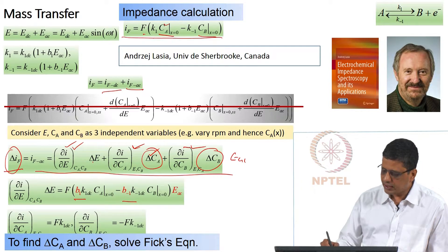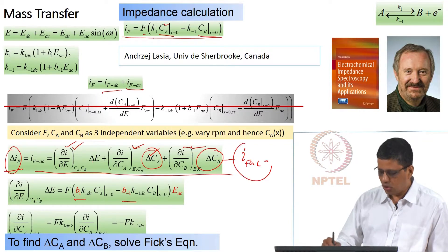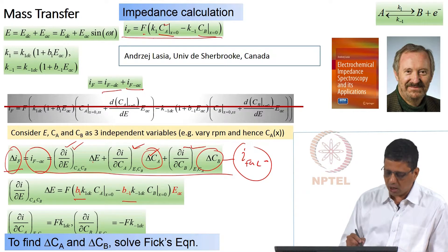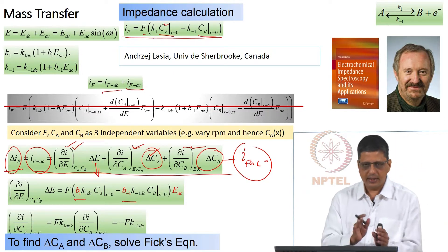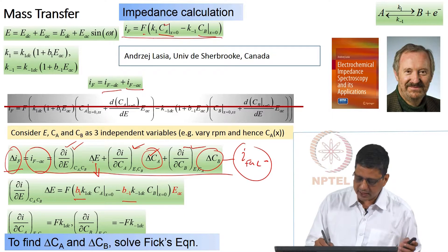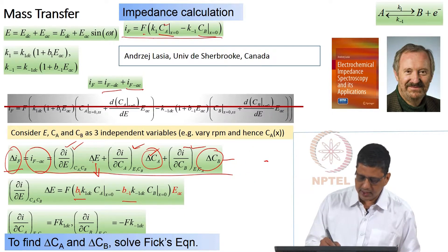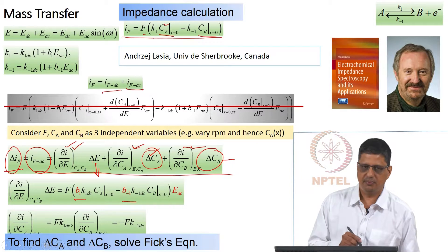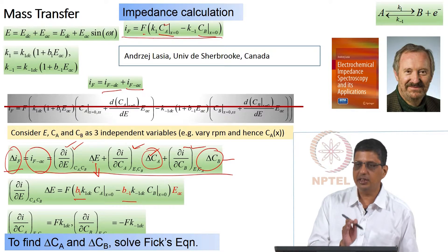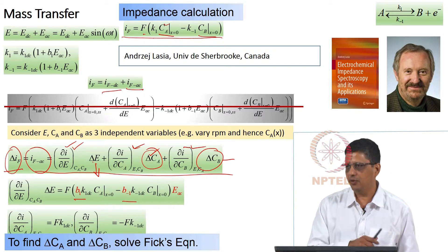What we are going to do now is instead of writing in terms of E_AC, we will find that it is easier to write in terms of I_F_AC. Then we will group all the I_F_AC on one side. We will group all the E_AC on the other side. It will not be all the E_AC. There will be only one E_AC. And still we will be able to get the expression for impedance. Just that do not expect that we are going to write del C_A and del C_B in terms of potential. It is easier to write in terms of the current. That is because the boundary condition for the Fick's equation comes in terms of current.